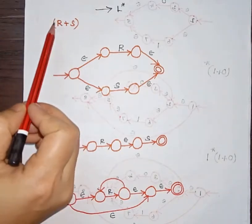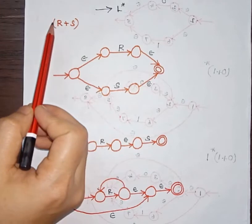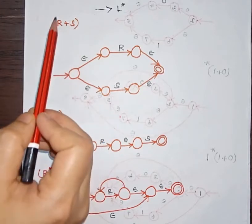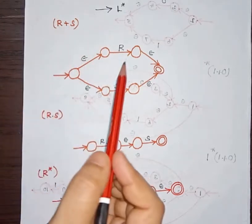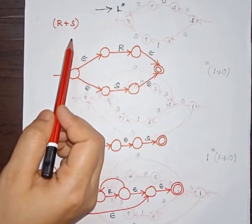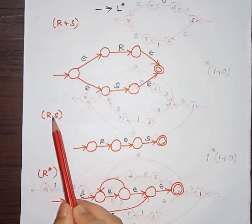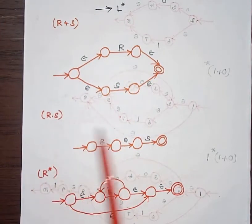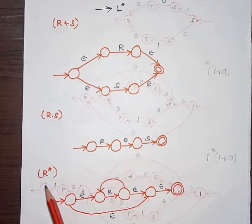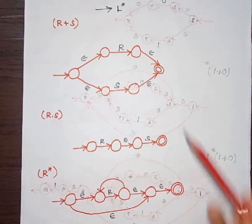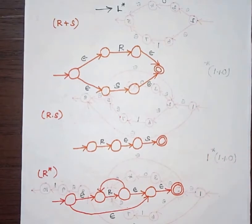Whenever there is a union operation between two symbols, how we can construct the NFA for that; whenever concatenation is there between two symbols, how the NFA will be; and whenever we have a closure, how that NFA will be. These are all the fundamentals, and based on this we are going to construct the NFA with epsilon move for the regular expression.